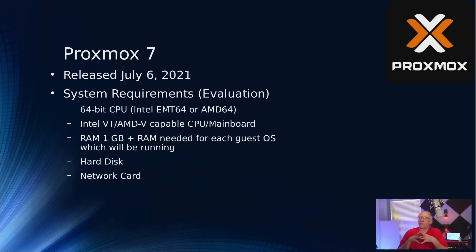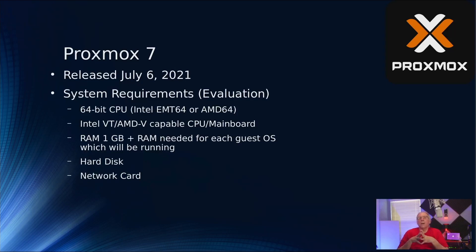You need one gig of RAM for the operating system, plus enough memory for each of your guest OSes. You can get by with pretty lightweight virtual machines — half a gig for servers, one gig for larger ones if you're just kicking the tires. You'll also need a hard drive and a network card to access the web interface and your VMs when they're running.